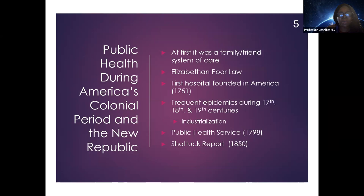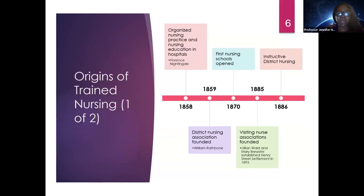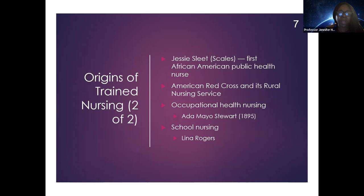Looking at the colonial period and the new republic: at first it was a family-friends system of care, which evolved into an established system caring for the aged and the mentally ill. This progressed until Florence Nightingale organized hospital nursing in 1846, followed by the first nursing schools in the 1870s. Jesse Sweet Scales was the first African-American public health nurse, and the American Red Cross rural nursing services and school nursing all began to arise at the turn of the century.